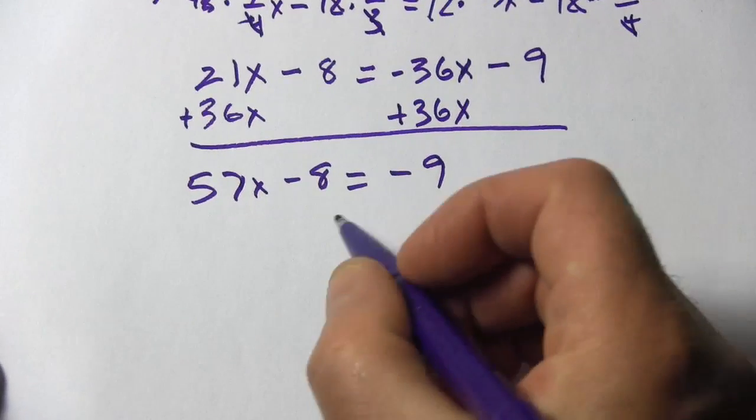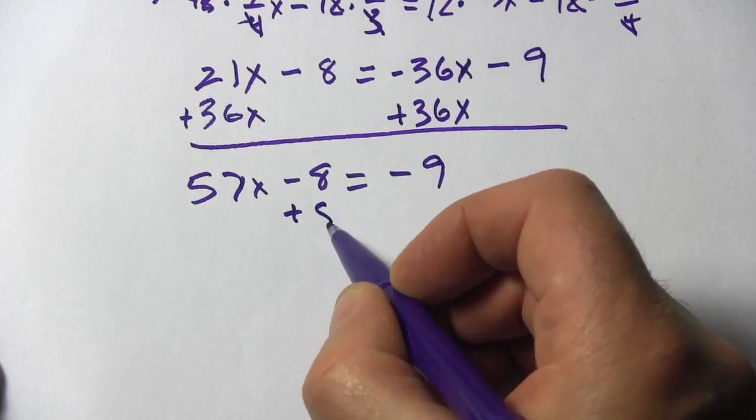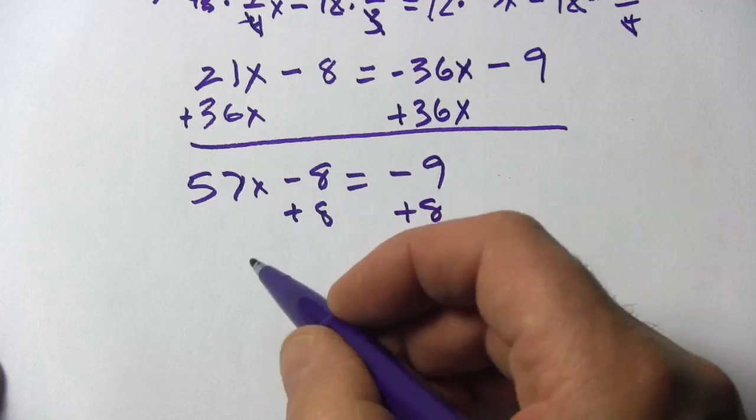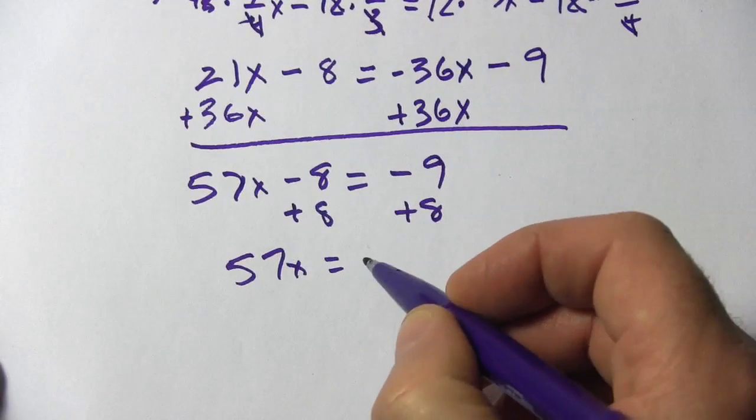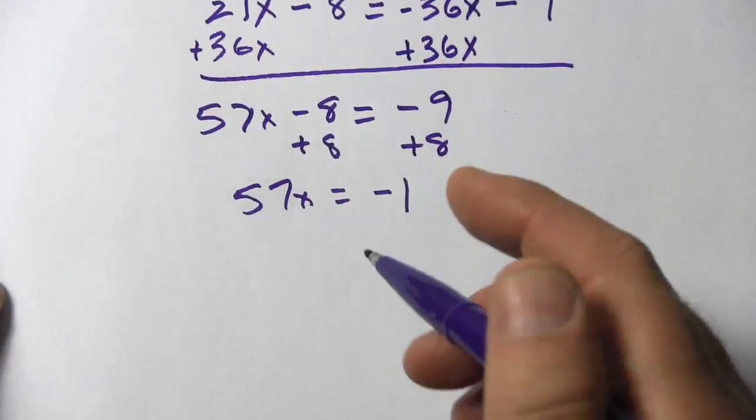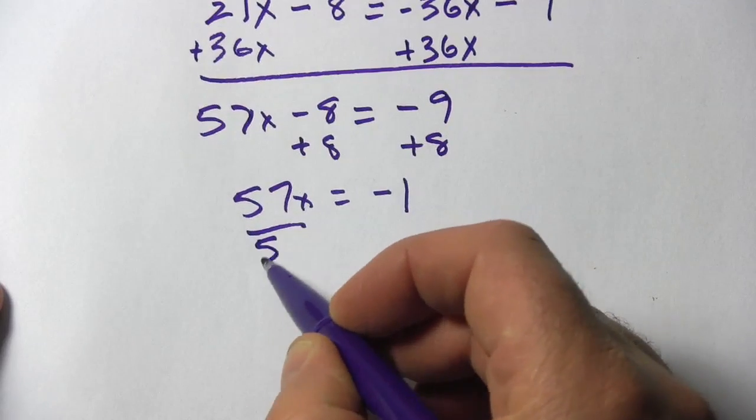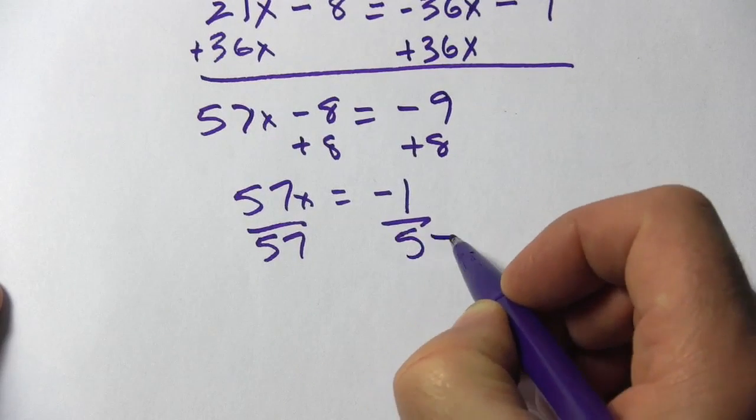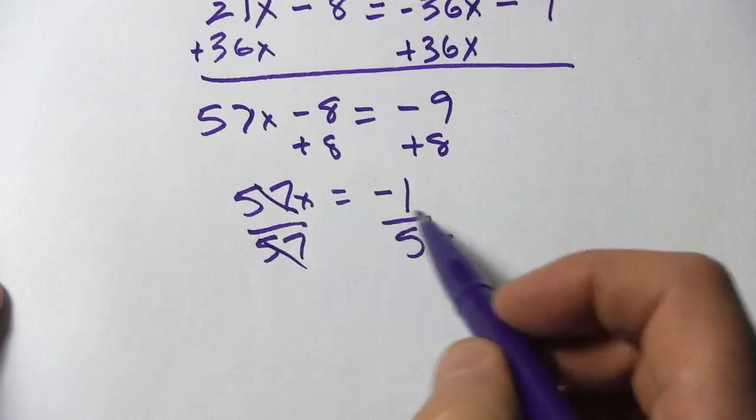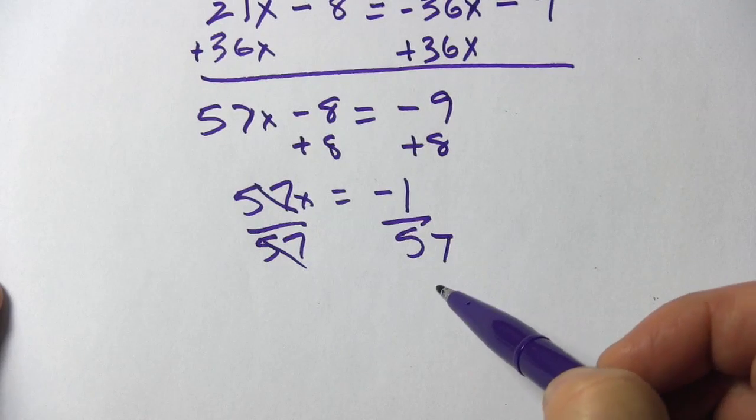And now, to finish solving for x, I'm going to get rid of this negative 8 to get the x term alone. So I get 57x equals negative 1, and then I just have to divide by 57, and what I get is x equals negative one 57th.